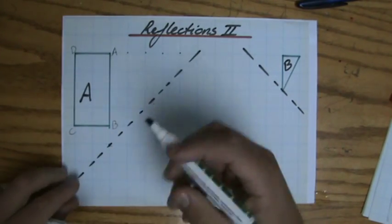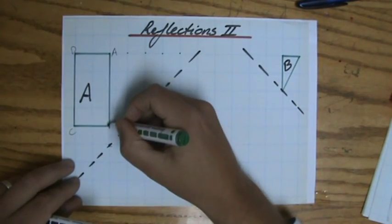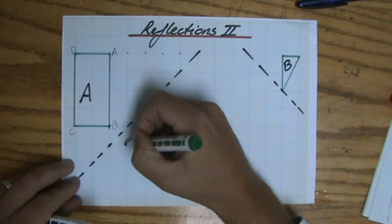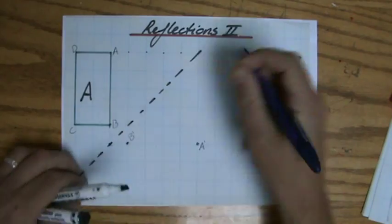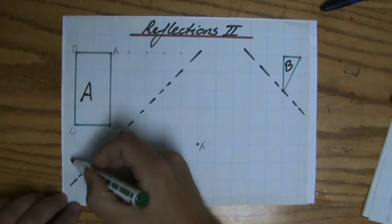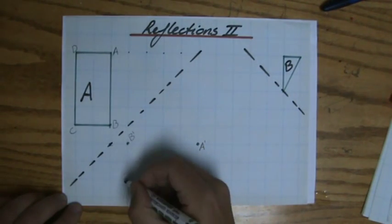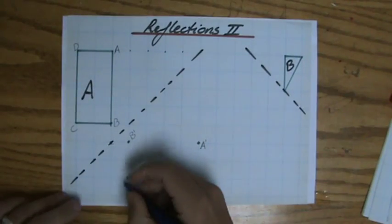Then it becomes quite simple. Point B: it's one to the right, so one down. That's going to be B apostrophe. What about C? It's one, two, three down, one, two, three over there. That's going to be C apostrophe.